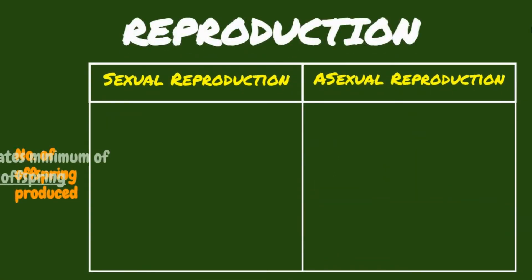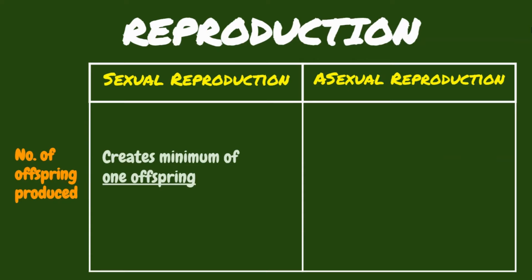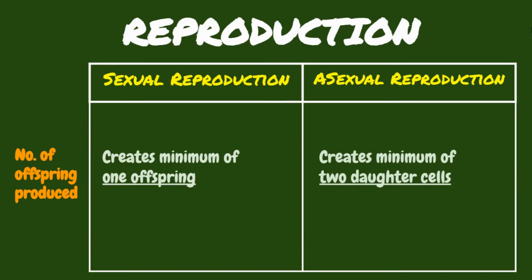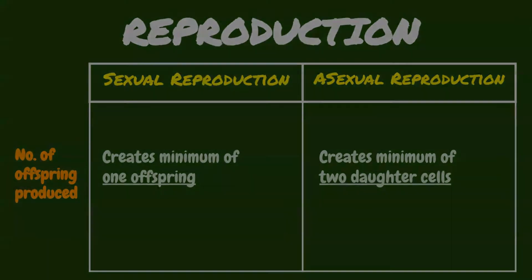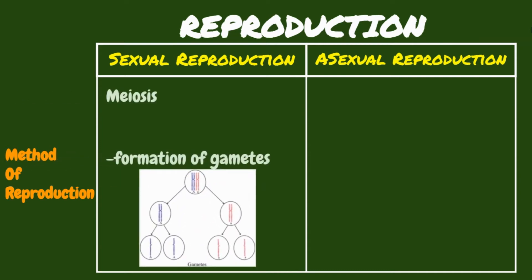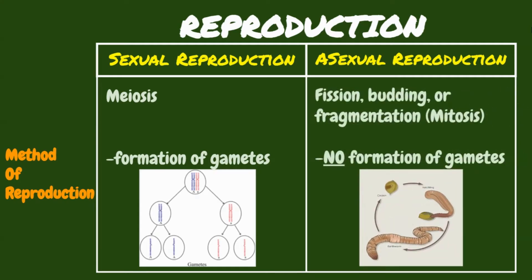In sexual reproduction, it creates a minimum of one offspring, while asexual reproduction creates a minimum of two daughter cells. In sexual reproduction, cells divide through meiosis — a special type of cell division used to produce the gametes, such as sperm or egg cells. In asexual reproduction, cells divide by mitosis through fission, budding, or fragmentation.